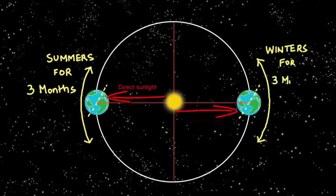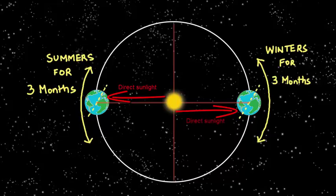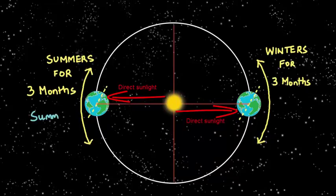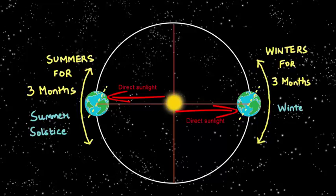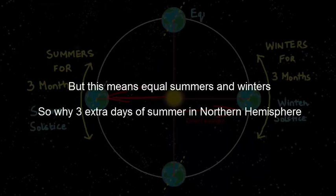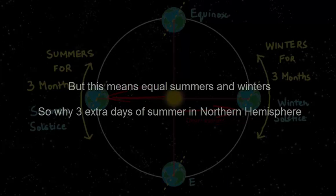And 6 months later, Northern Hemisphere will have winters while the Southern Hemisphere has summers when the sun rays are falling directly over the Southern Hemisphere. But this should mean equally long summers and winters. So where is this 3 extra days of summer coming from?